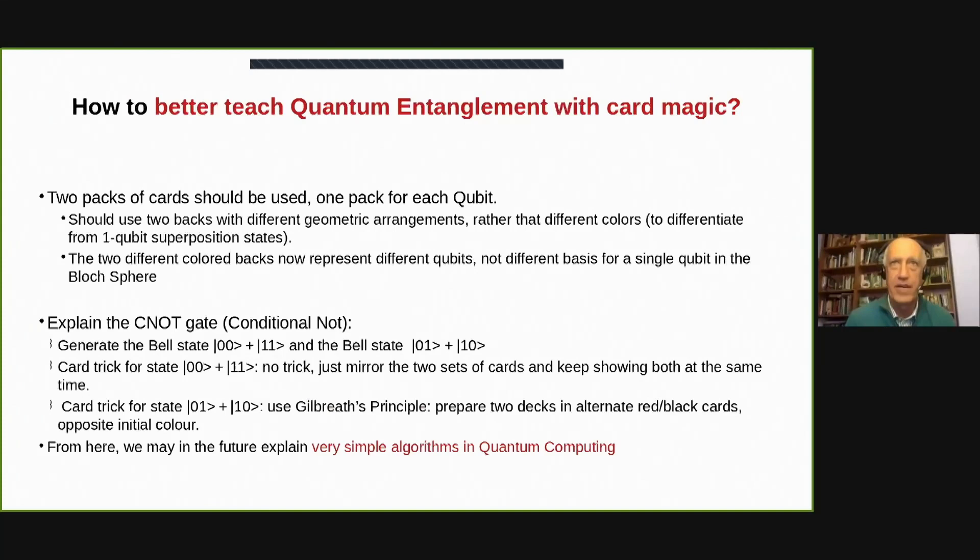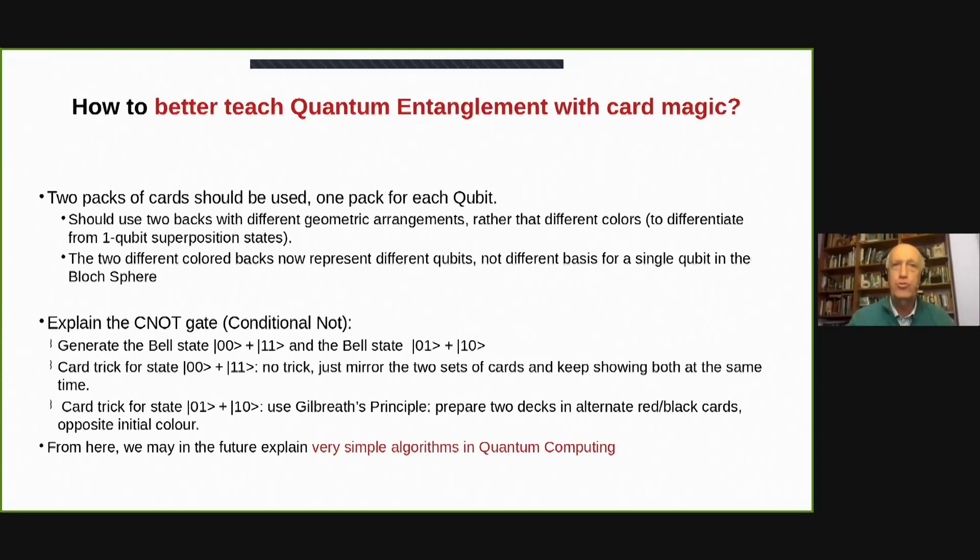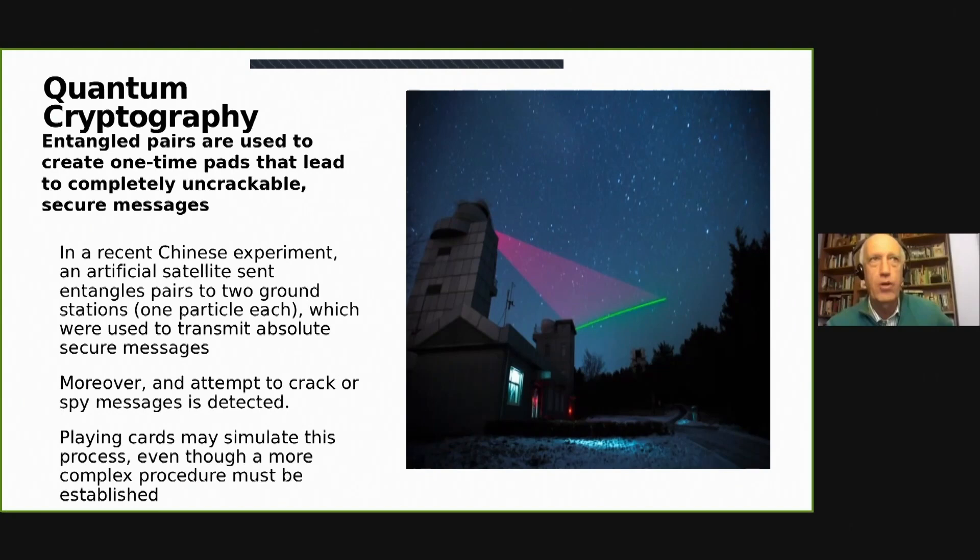We can even try to improve teaching and explaining quantum entanglement. How? We must use two different packs of cards. And as I told you before, we can use the Gilbreath principle to explain and to teach the C-NOT, the conditional NOT gate, in quantum computing.